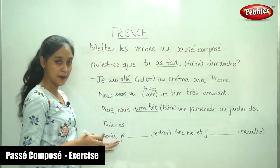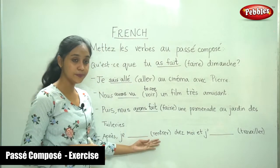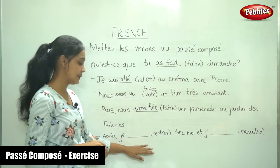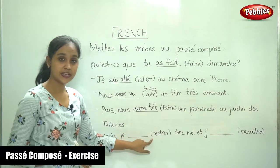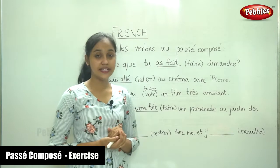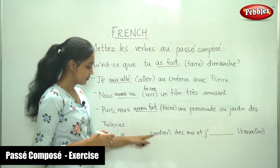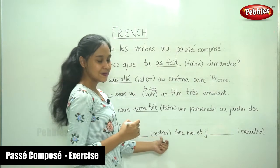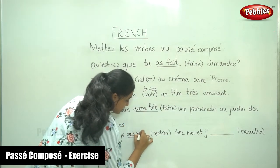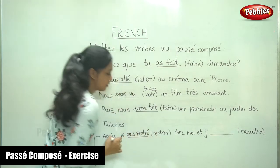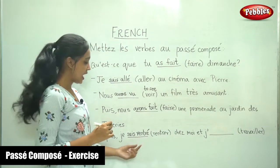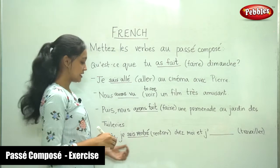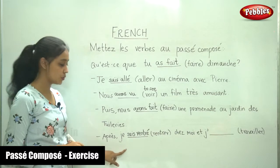The last sentence: Après, je [rentrer] chez moi. The verb is rentrer — it is a verb of motion, so it takes être as the auxiliary. For je, the être conjugation is suis. The past participle: it is an -er verb, so je suis rentré. Whenever you use être as the auxiliary, make sure there is agreement. Here the subject is je, so you have no problem.